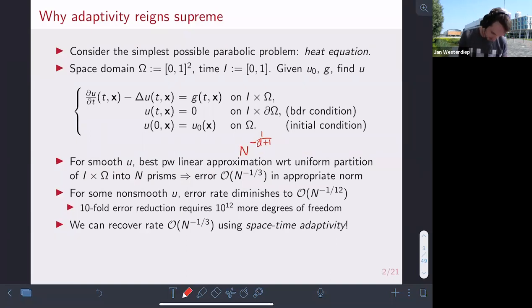But if the solution is not smooth, for instance if the initial condition doesn't adhere to the boundary conditions, then this error rate can be killed to almost nothing. In the example that we'll see in a bit, it reduces to -1/12. This means that if you want to have a tenfold error reduction, you need 10^12 more degrees of freedom, which is absolutely insane. However, we can recover this uniform rate using space-time adaptivity. And this is the goal for today.